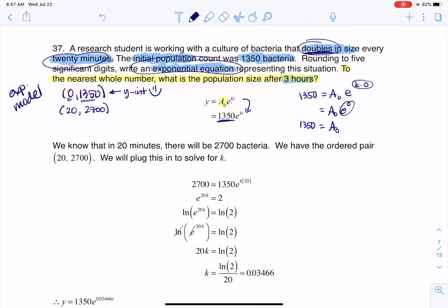And then I'm going to plug in my other ordered pair, (20, 2700), and then I'm going to solve for k. And that's what you see me doing here. So I put in 2,700 for y, 20 for t. And I already knew A sub 0 was 1,350. And then it's a matter of solving this exponential equation for k.